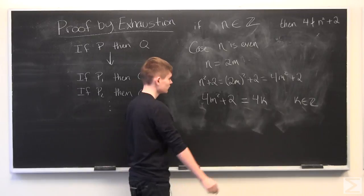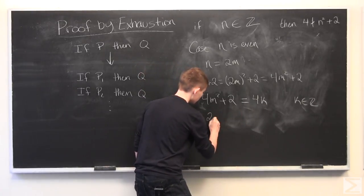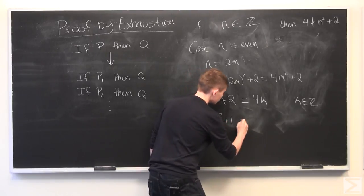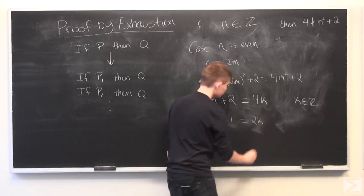From here, we can divide both sides by 2 and we get 2M squared plus 1 is equal to 2K.